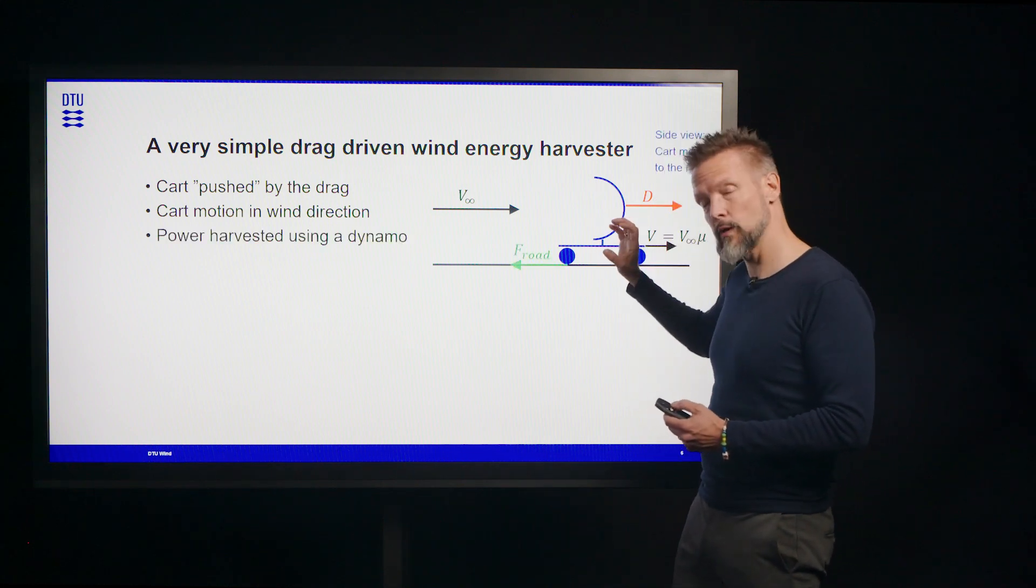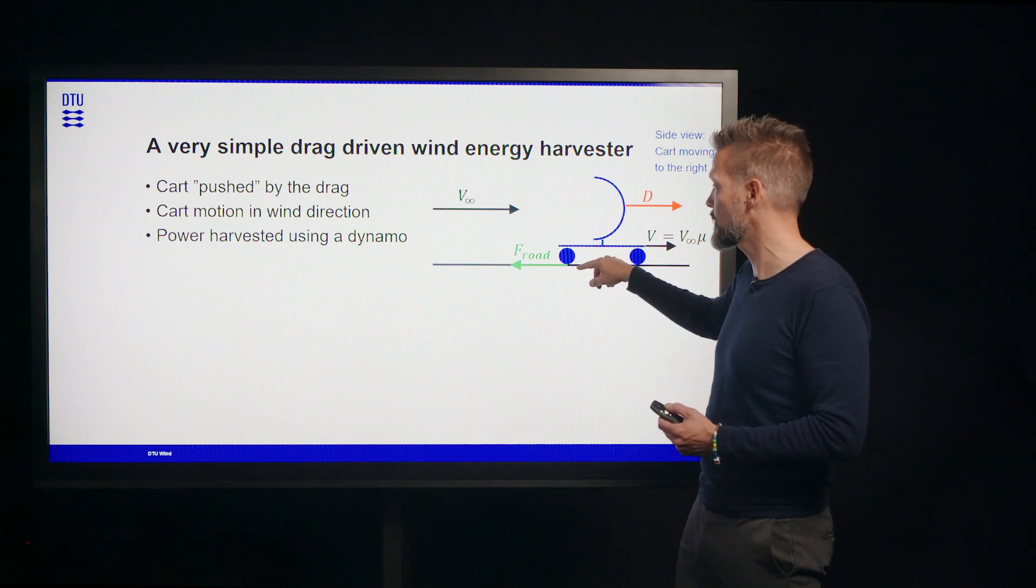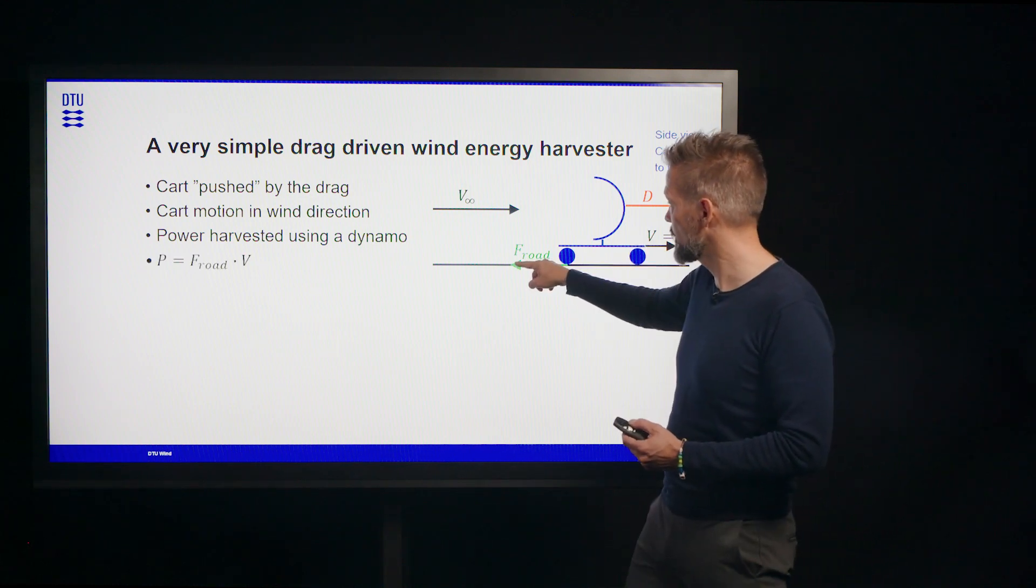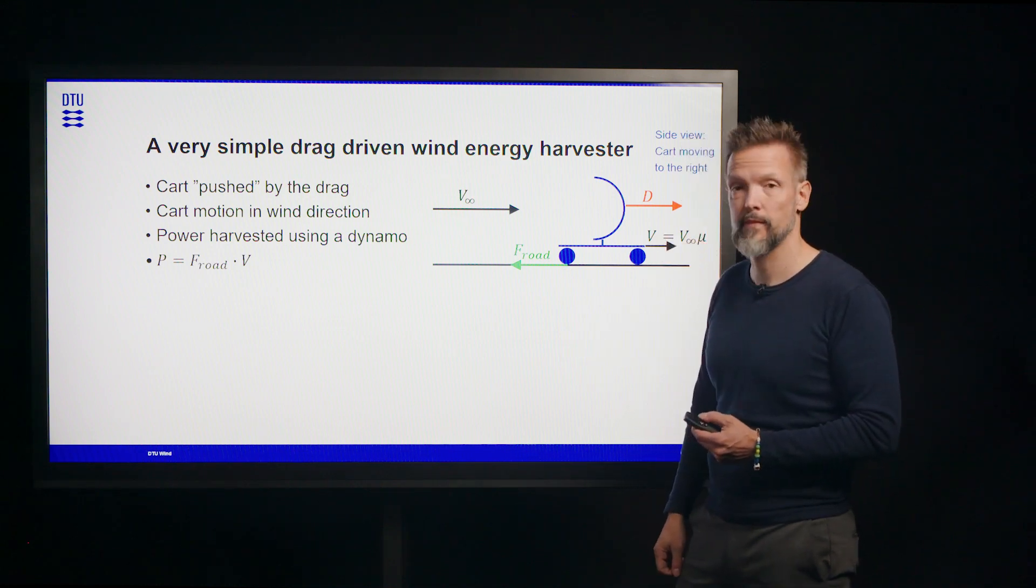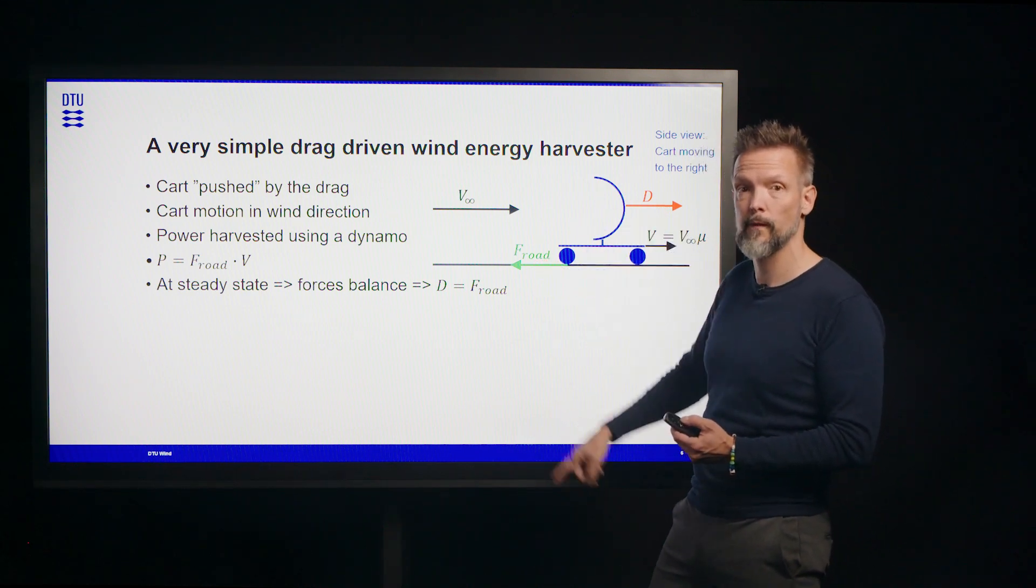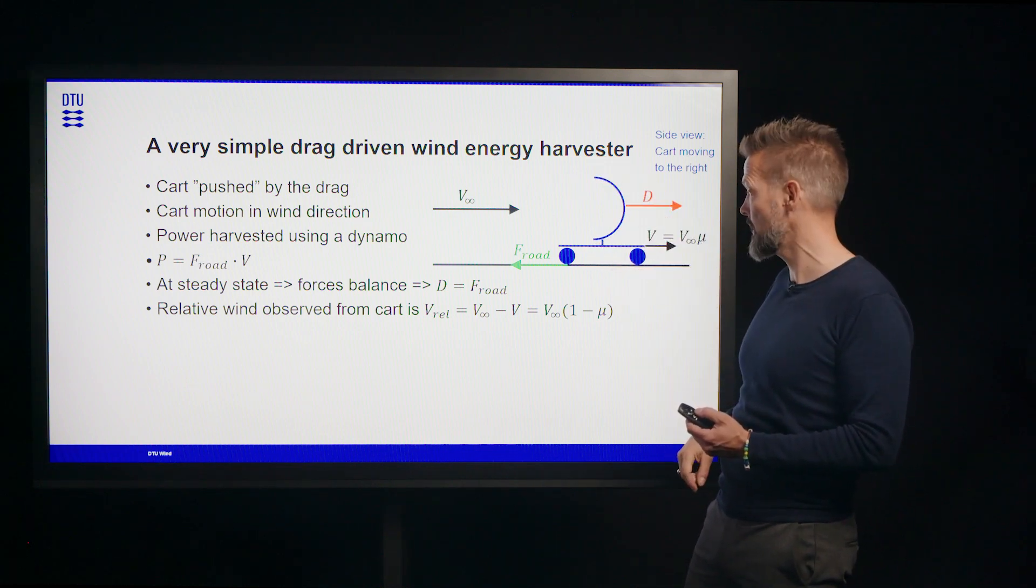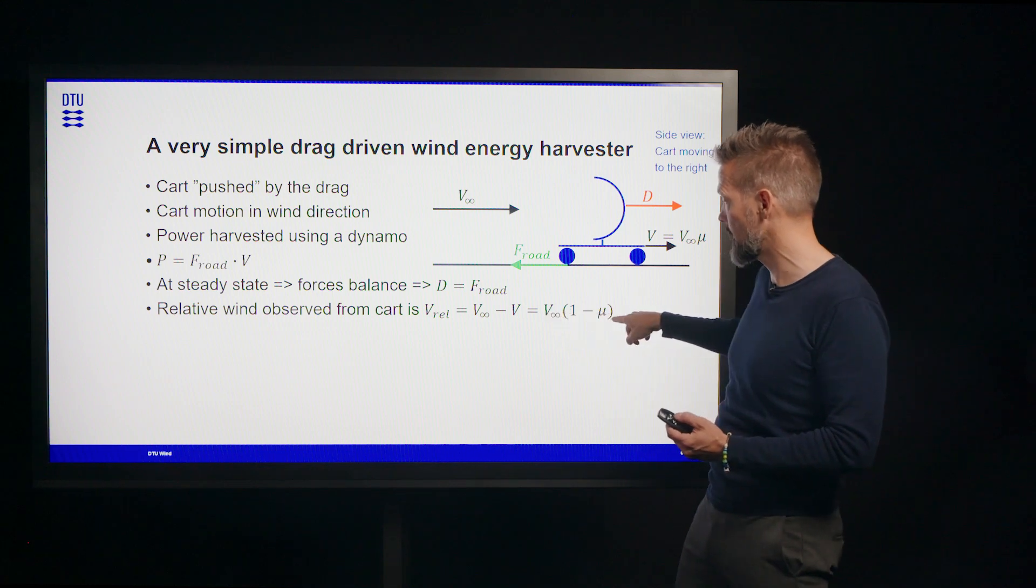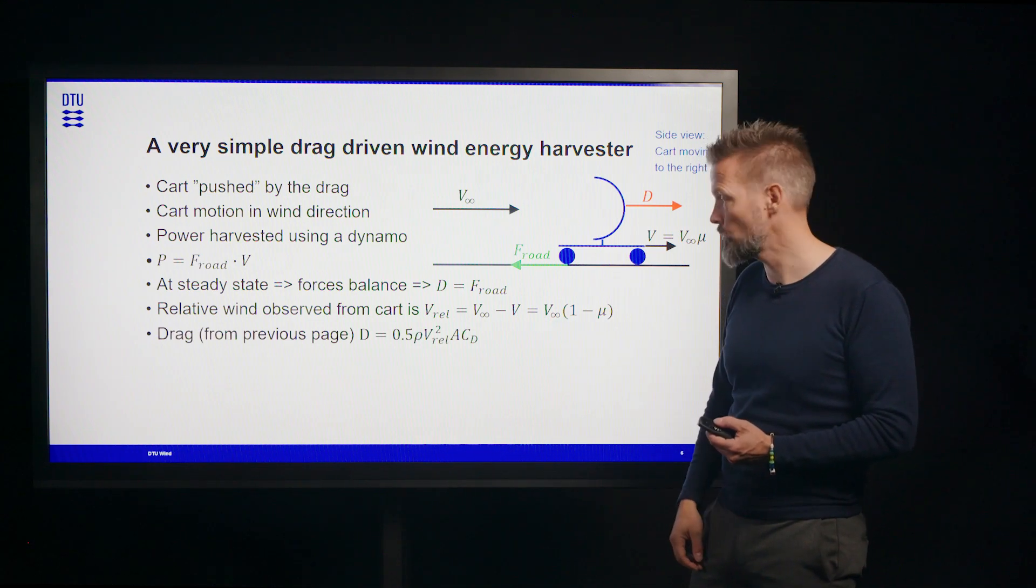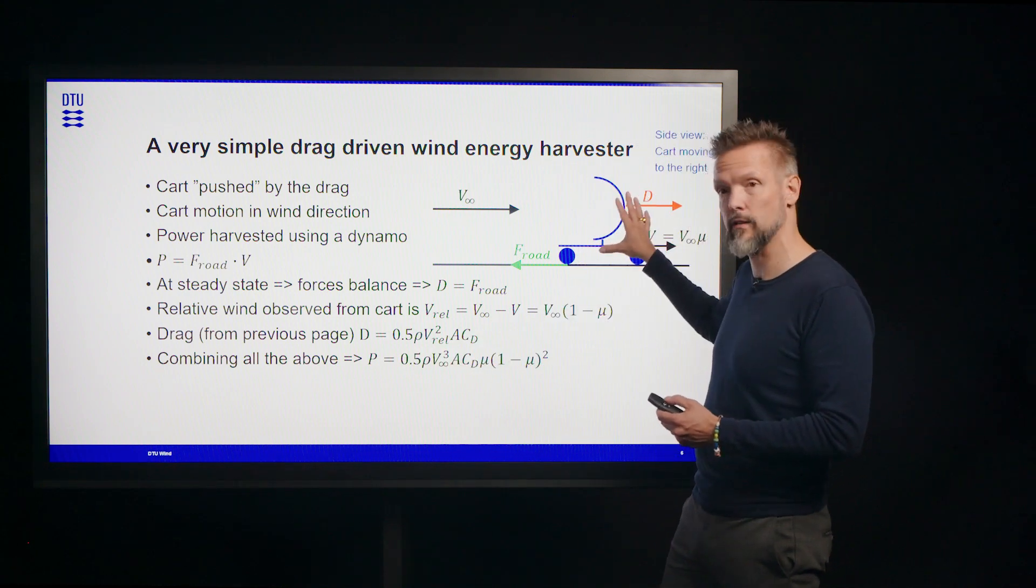And the way we take energy out of this is that we have a generator that is on the axle or like a dynamo put on it. And this means that there's a force exchange between the cart and the road. So the power from the power equations earlier would be that force times the velocity of the cart. That's the power you can get out. And if we're at steady state, then the forces balance. So drag and road forces are equal. And the relative speed as observed from the cart is the wind speed minus the cart speed. The drag from before was expressed like this. And then if we combine all the above, we get the equation here for the power that this cart could give you out.